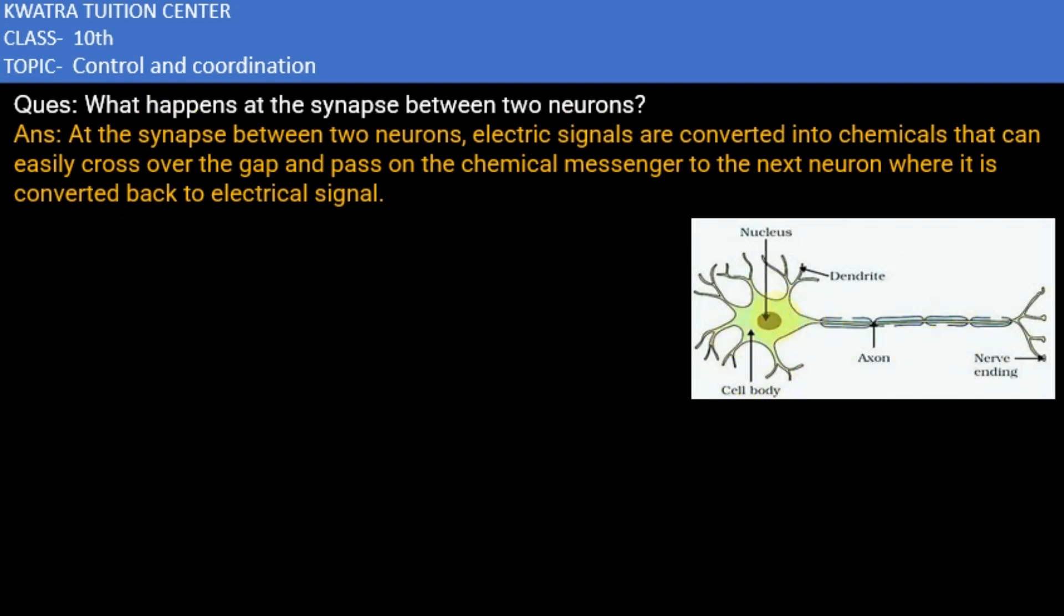And the parts are written here which is nucleus, cell body, dendrite, this part is axon, and this is nerve end. Now let's come to the question. First of all, I'll tell you what is synapse.